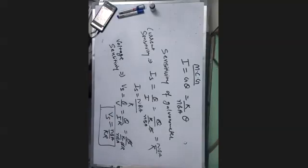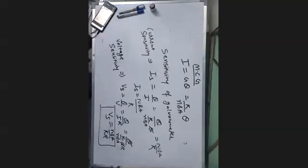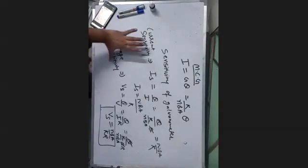Definition of voltage sensitivity: if a galvanometer shows a large deflection even when a small value of potential difference is applied across it, then the galvanometer is sensitive in terms of voltage. At low voltage it shows large deflection; at low current it also shows large deflection — so it is a sensitive galvanometer.